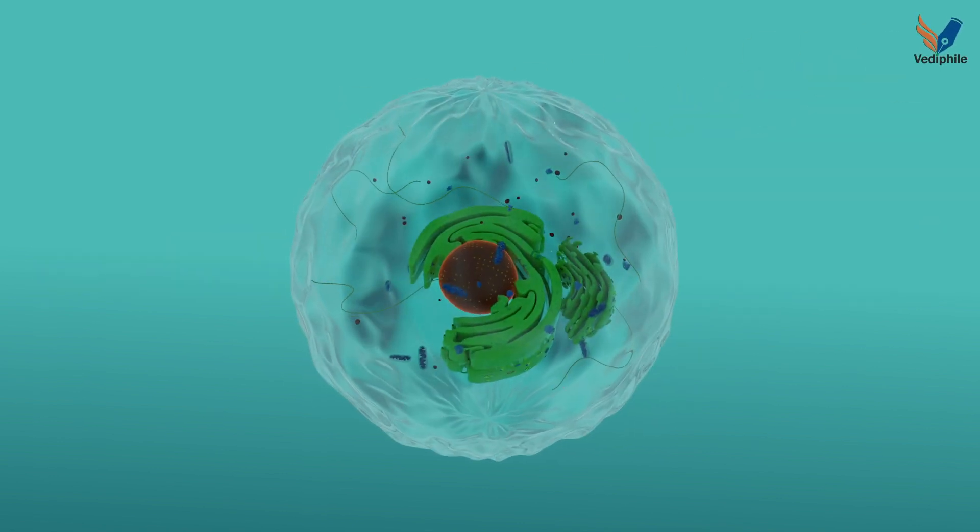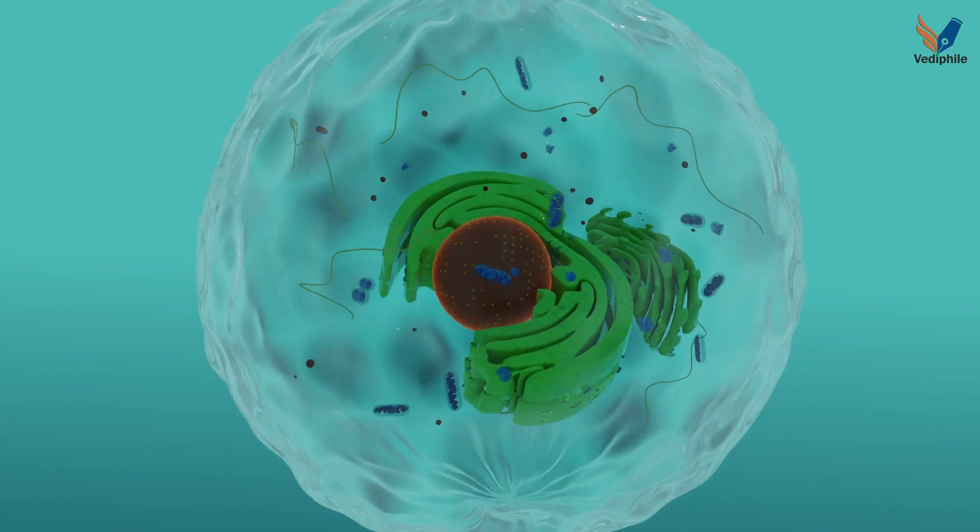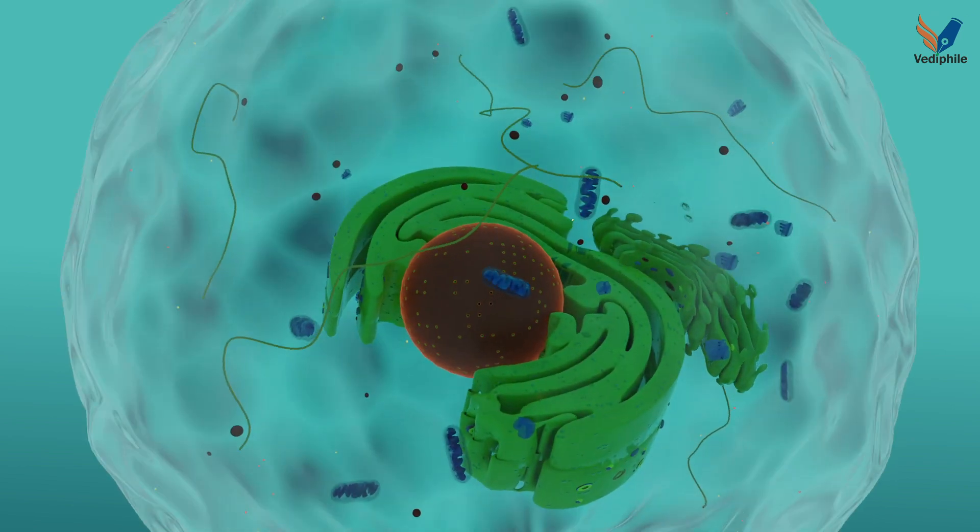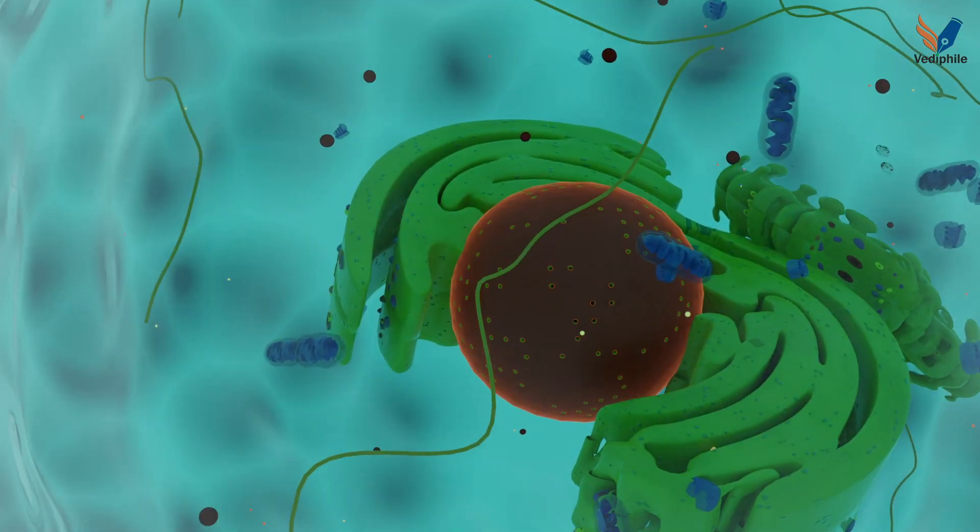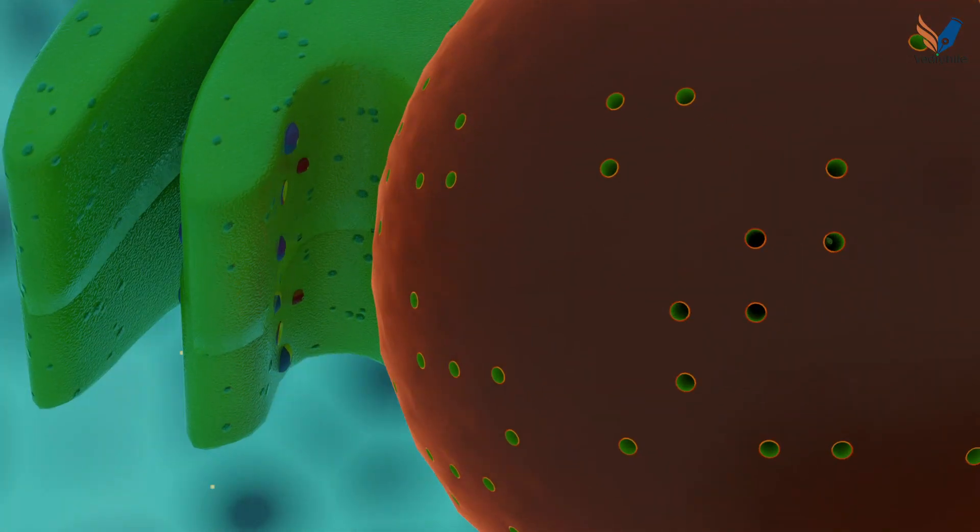The nucleus is a double membrane organelle that contains the genetic material and other instructions required for cellular processes in the eukaryotic cells.